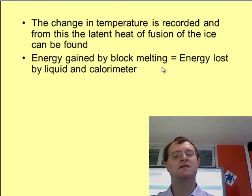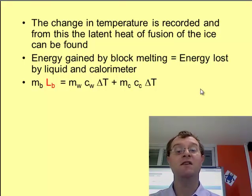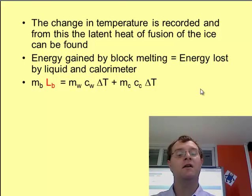Energy gained by the block of melting is equal to the energy lost by the liquid and the calorimeter. By keeping the ice initially at zero degrees centigrade, it's already going through that phase transition, so I don't need to worry about heating the ice or changing the temperature of the ice. By doing this sum, I could then rearrange to find out what the latent heat of fusion is.